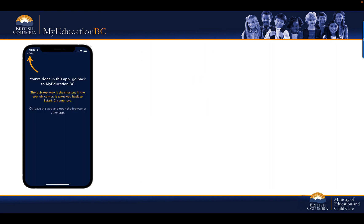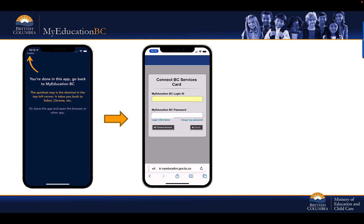The BC Services Card app will confirm the connection to your My Education BC student or parent login ID and may provide an option to return to the web browser on the mobile device. Use either the option provided within the BC Services Card app to automatically return to the web browser, or manually return to the web browser on the mobile device. Next, confirm the connection by re-entering your active student or parent My Education BC login ID and password, and then select Connect Account.